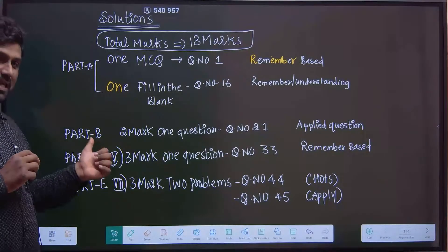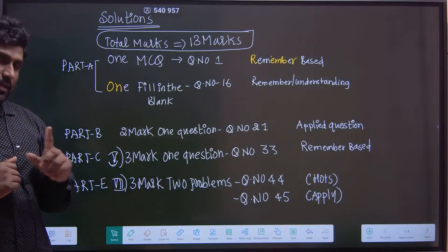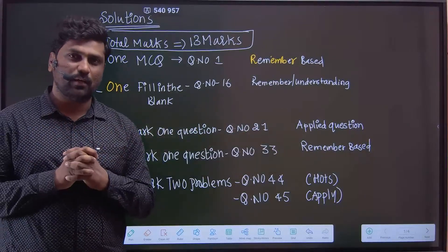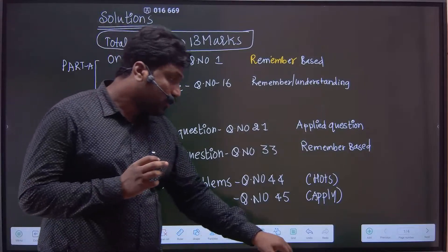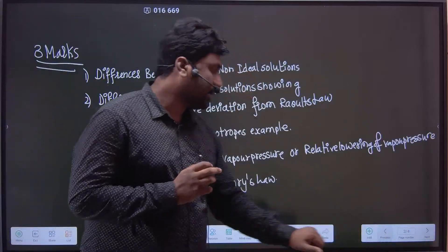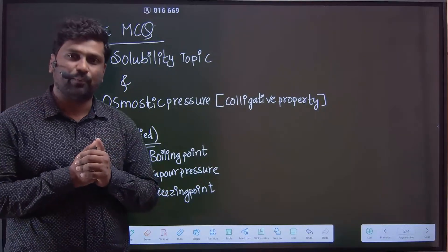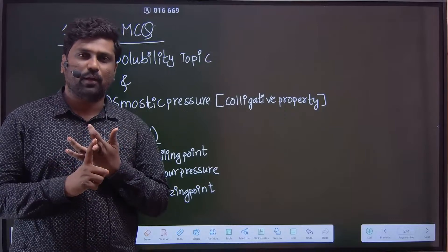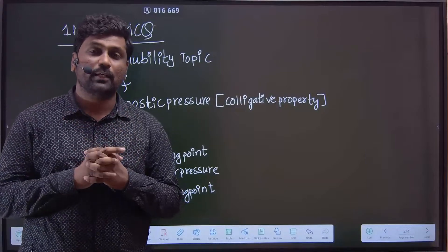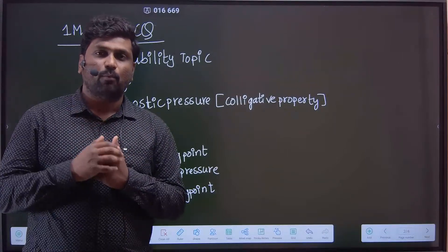The next very important part is Part B — two marks. One compulsory question, question number 21, will always be an applied question. The topics for this two-mark question would be solubility, boiling point, vapor pressure, or freezing point. For example: 'What happens to the boiling point of a solution whenever a non-volatile solid solute is dissolved in a liquid solvent, and why?'